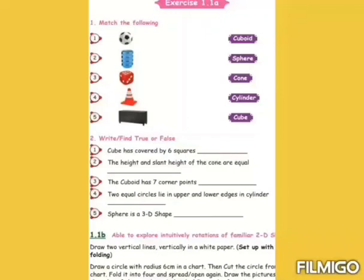Second roman letter, write true or false. First one, true. Second, false. Third, false. Fourth, true. Fifth, true.